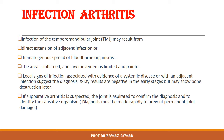Another disorder affecting the TMJ is infective arthritis. Infection may spread to the TMJ from an adjacent area, such as by direct extension from the parotid gland, or by hematogenous spread of blood-borne organisms from an area distant to the TMJ. This results in inflammation, affected jaw movement, limitation, swelling, redness, and tenderness of the area.